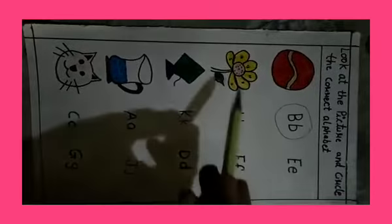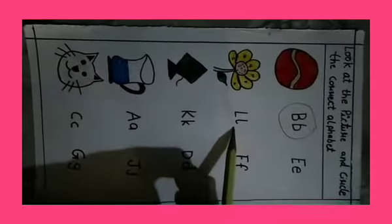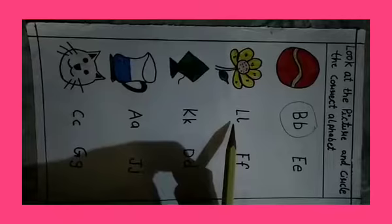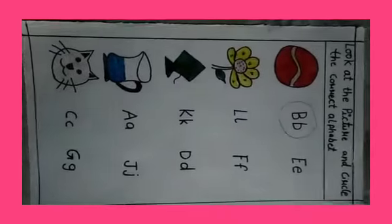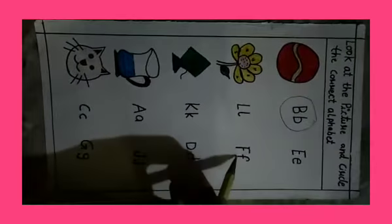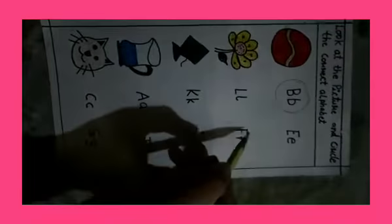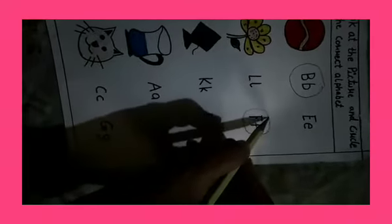Next what is this? Flower. Which alphabet is this? L. Is flower start with L? No. So which is correct alphabet? F. F for flower. So we will circle the alphabet F.